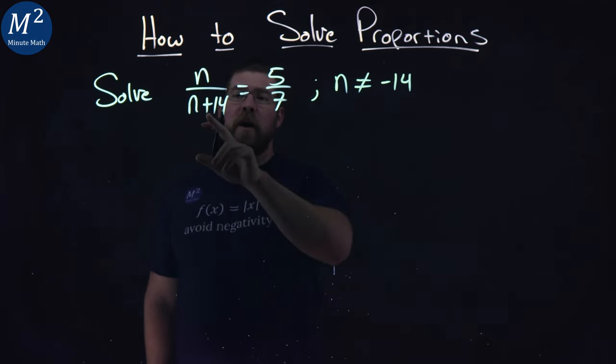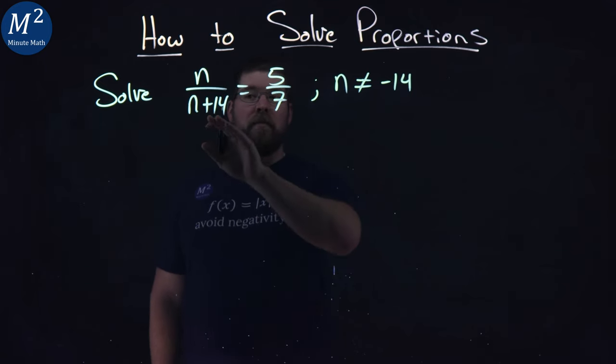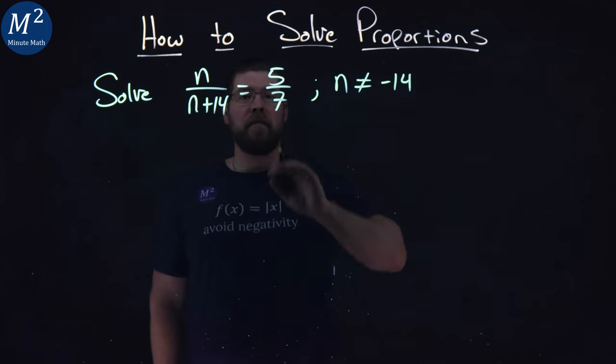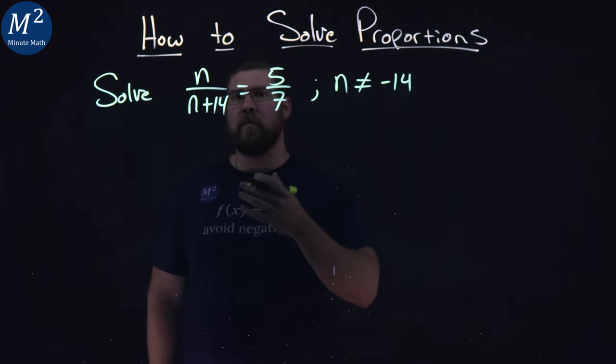Alright, now from here, I want to find the least common denominator between both of these fractions. We have n plus 14 and 7, and that's really our answer for us. It's 7 times n plus 14.